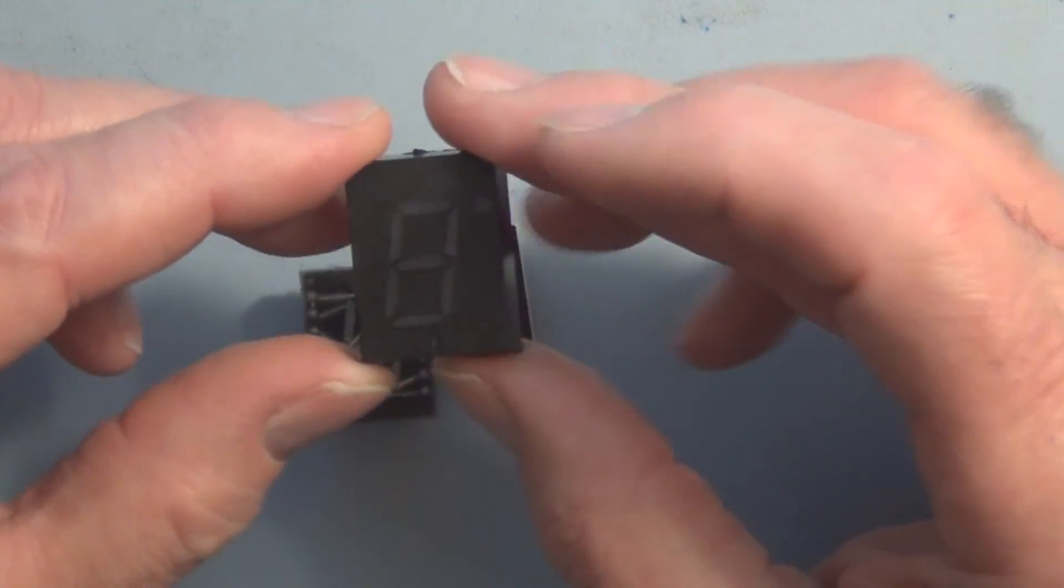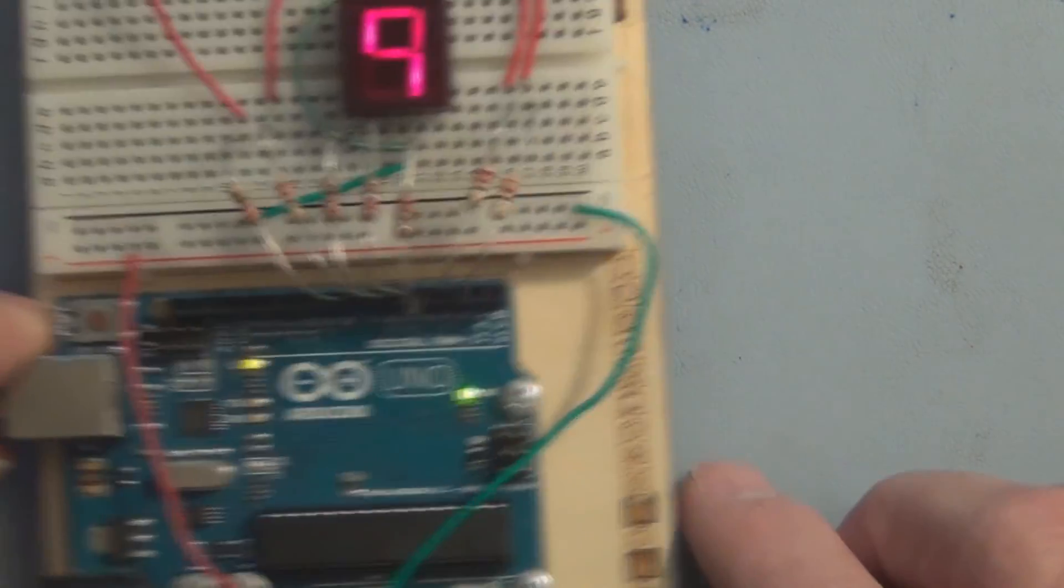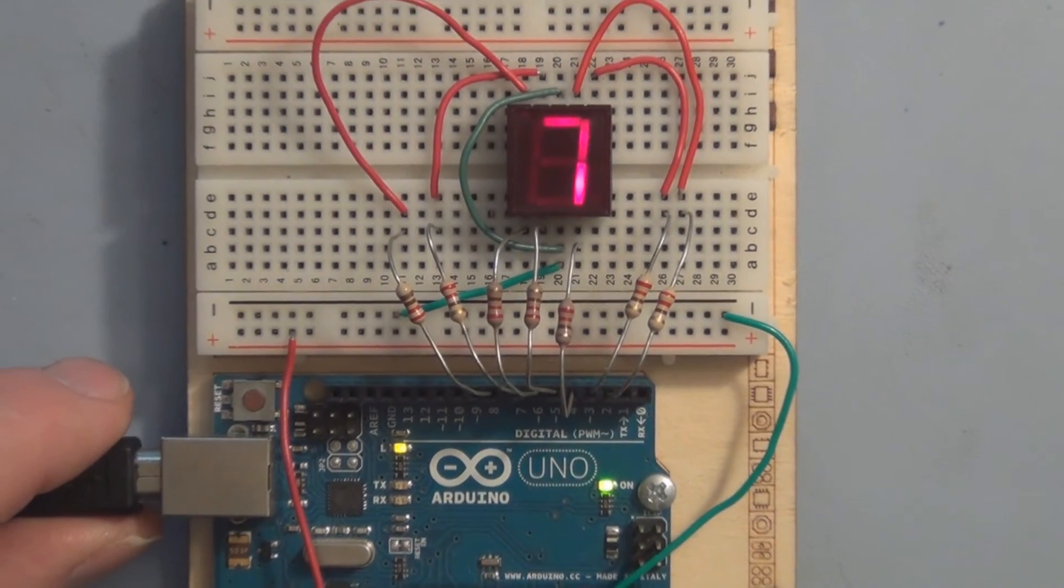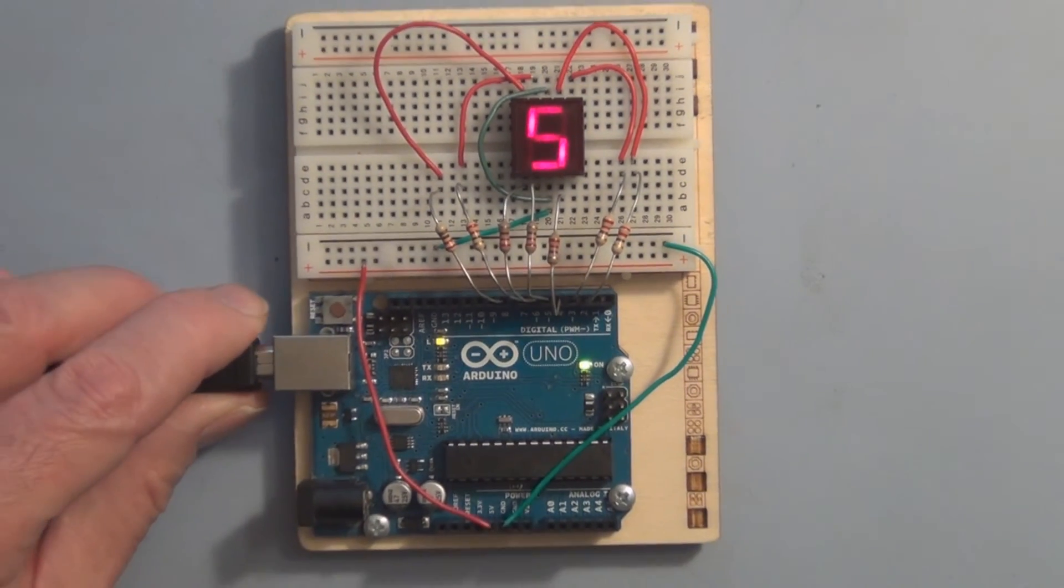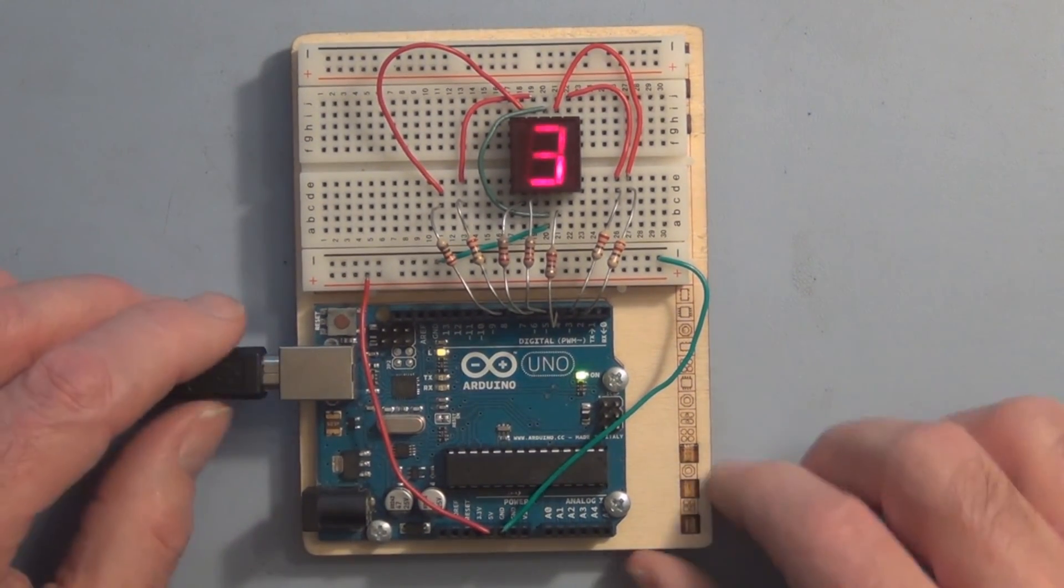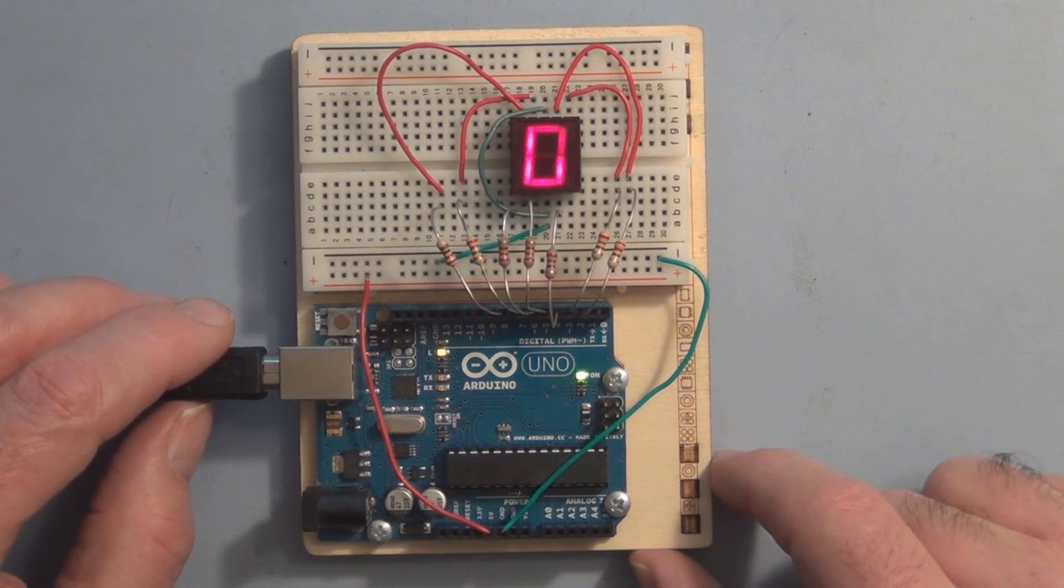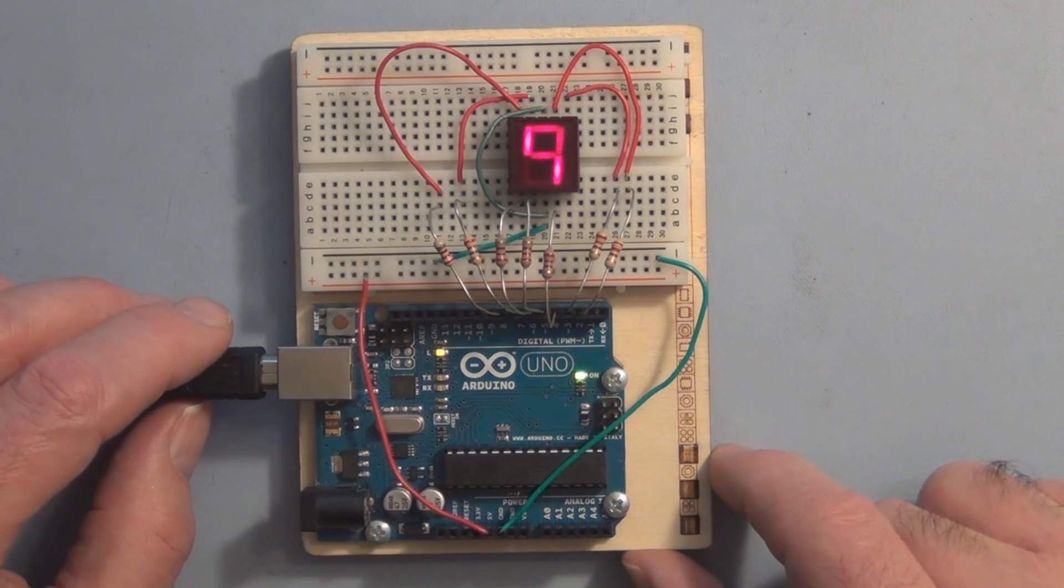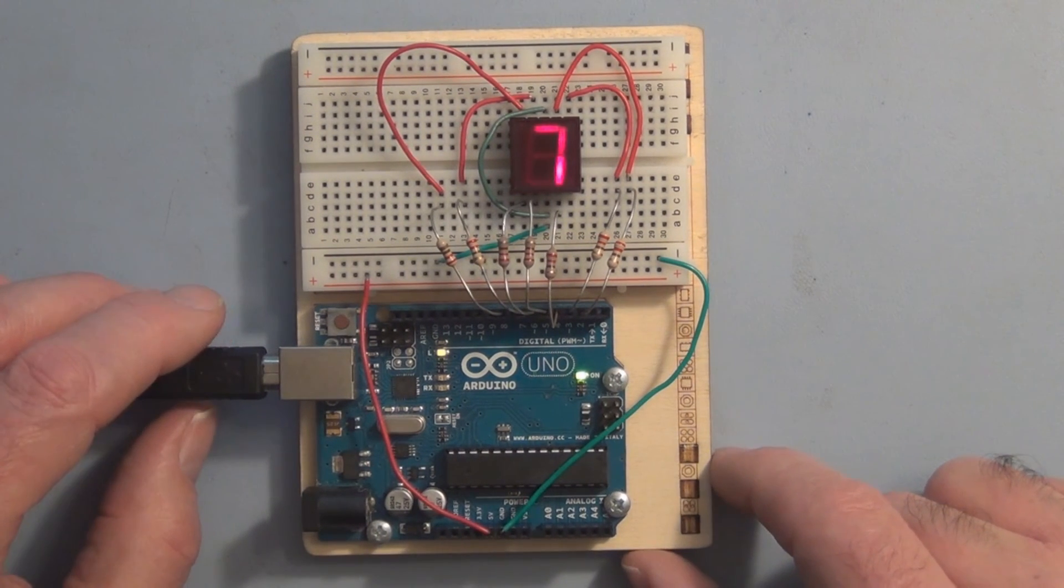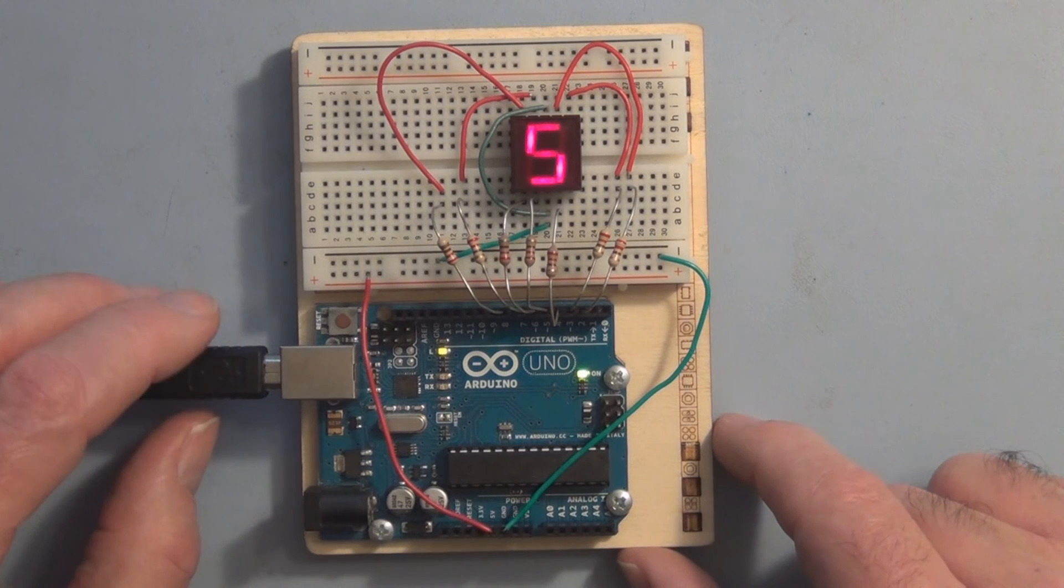But even though this is older technology, it's still useful. And I put one up to the Arduino, and in this case, the Arduino or the microcontroller with programming is acting as the BCD to seven segment display decoder.